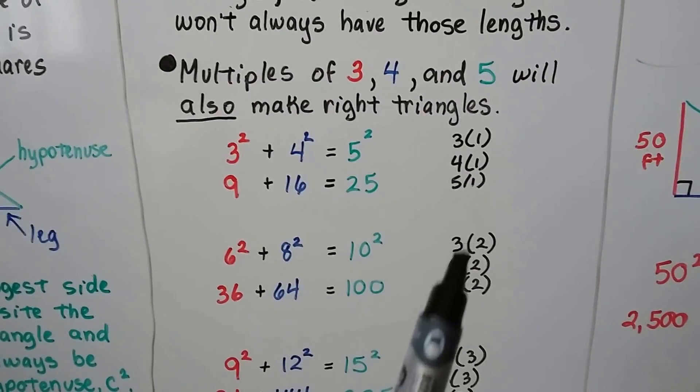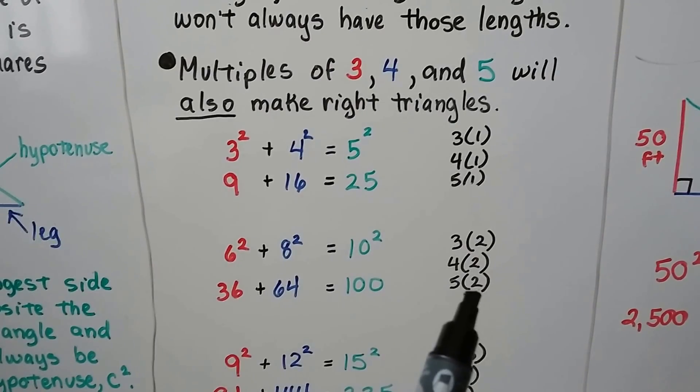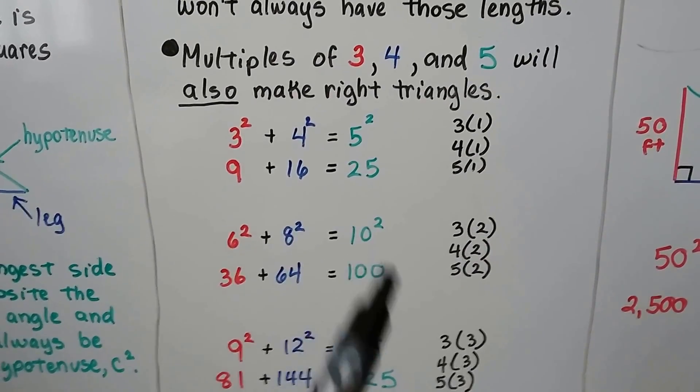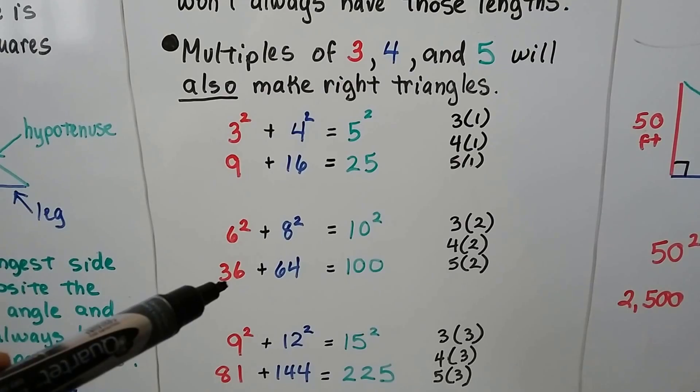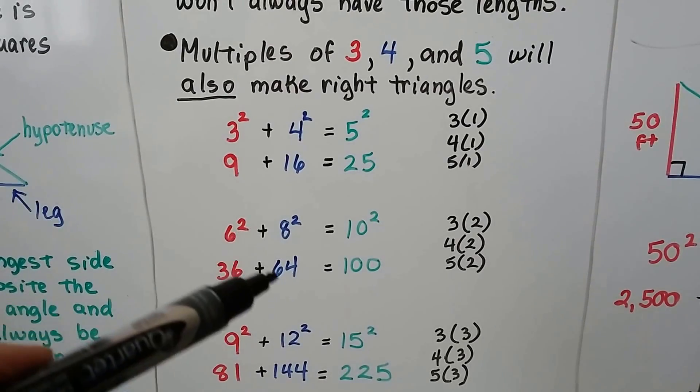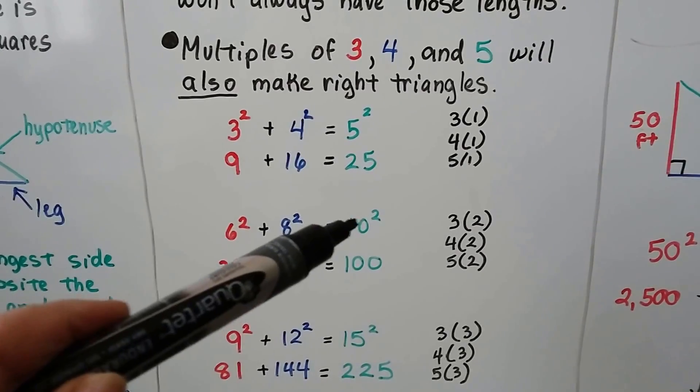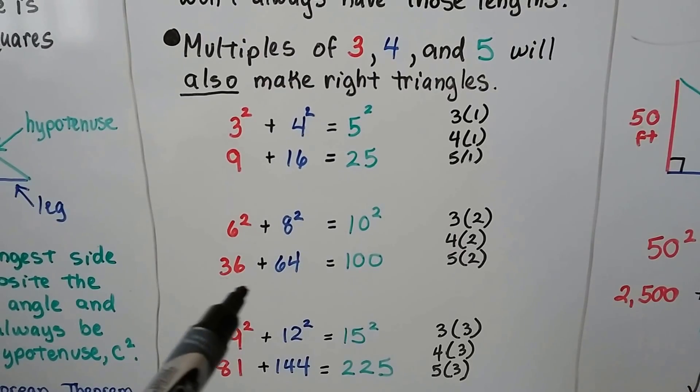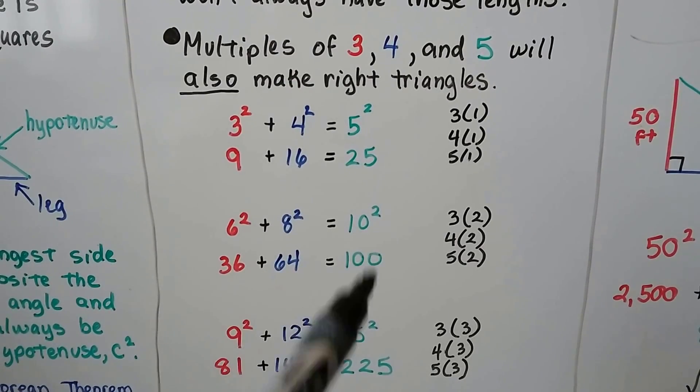So, we could also do 3 times 2, 4 times 2, and 5 times 2, which will give us 6, 8, and 10. 6 times 6 is 36. 8 times 8 is 64. 10 times 10 is 100. And 36 plus 64 does equal 100.